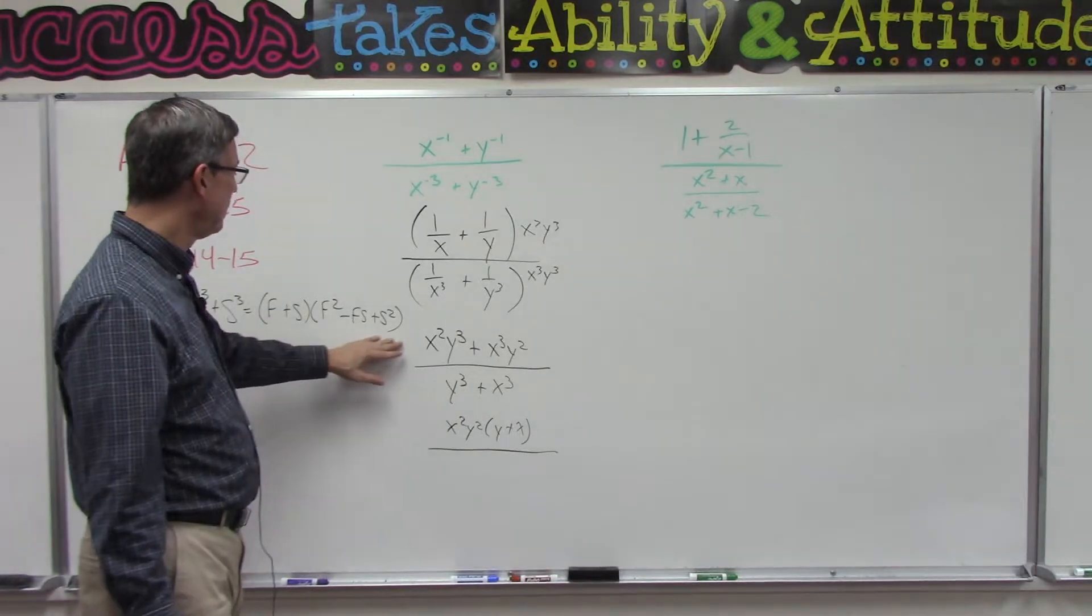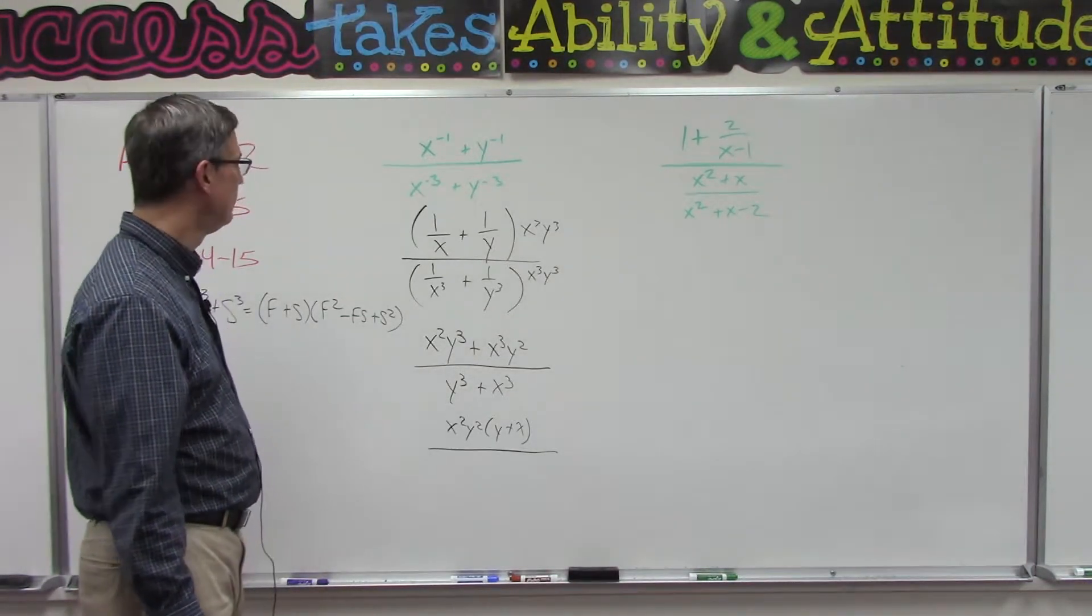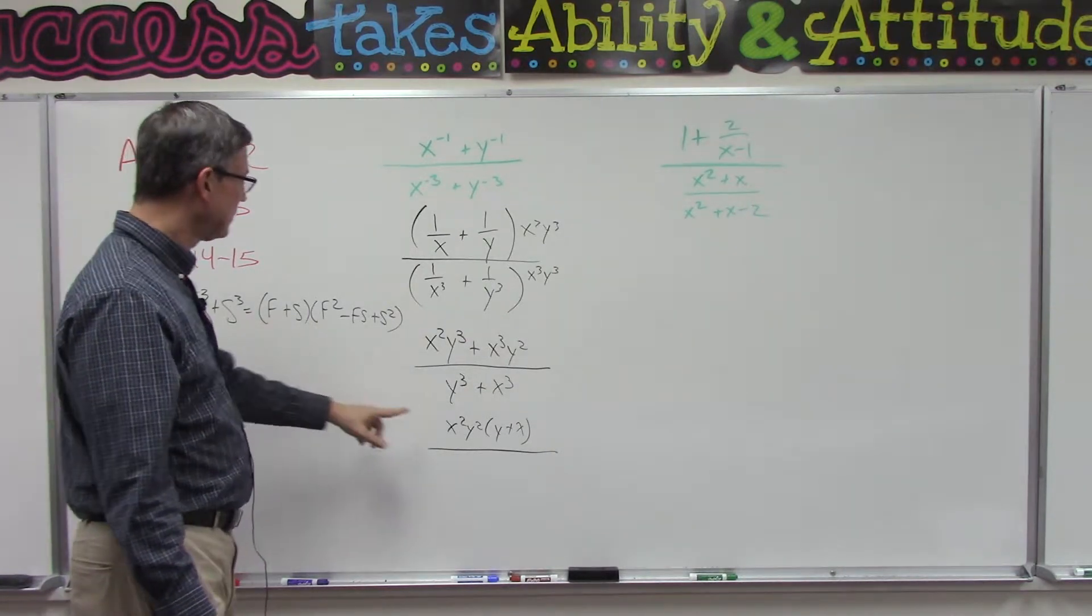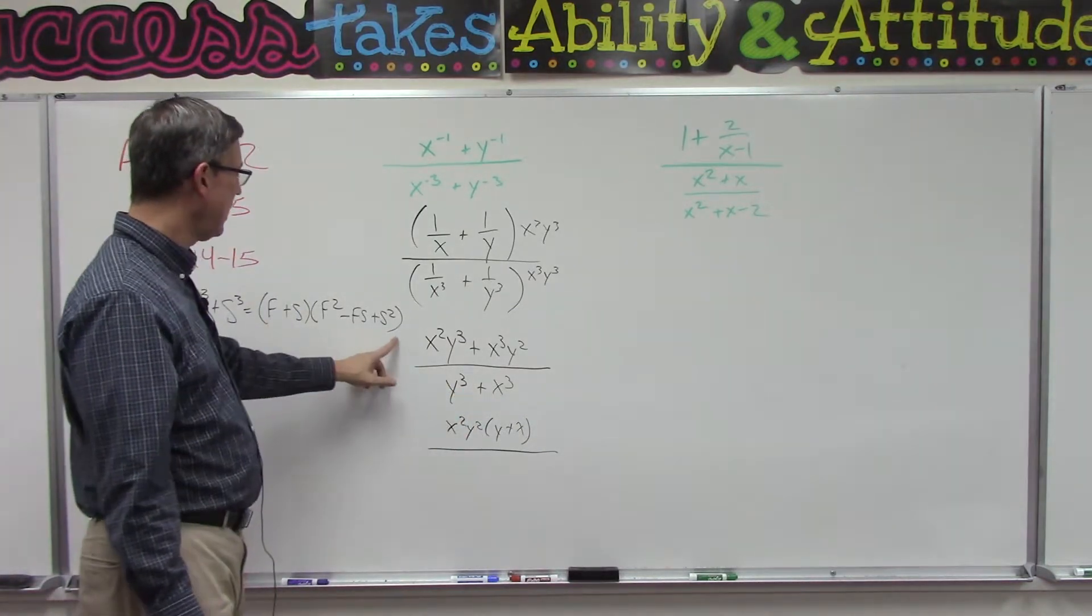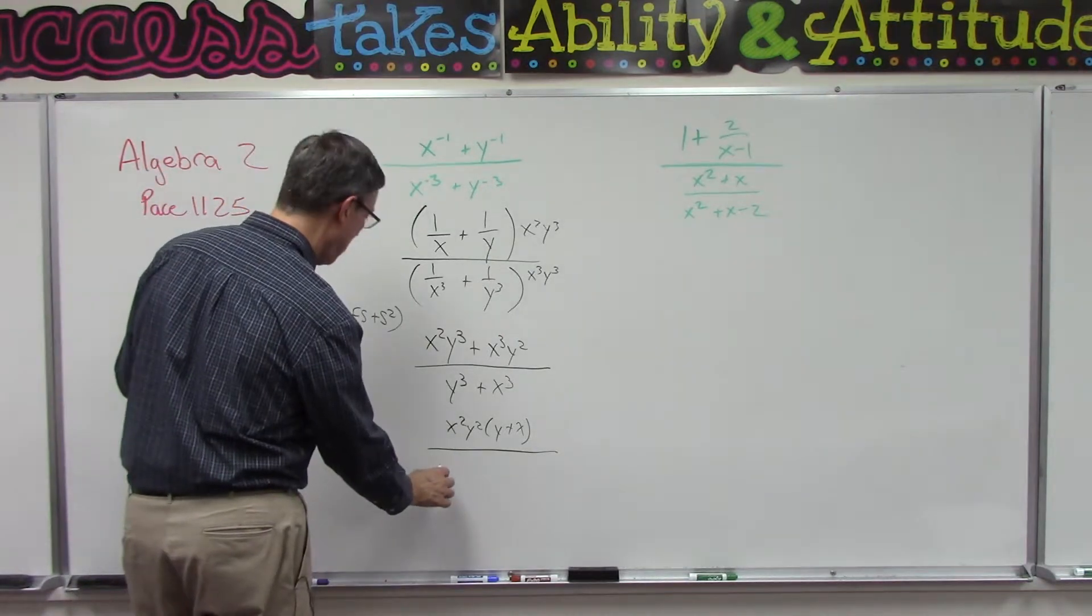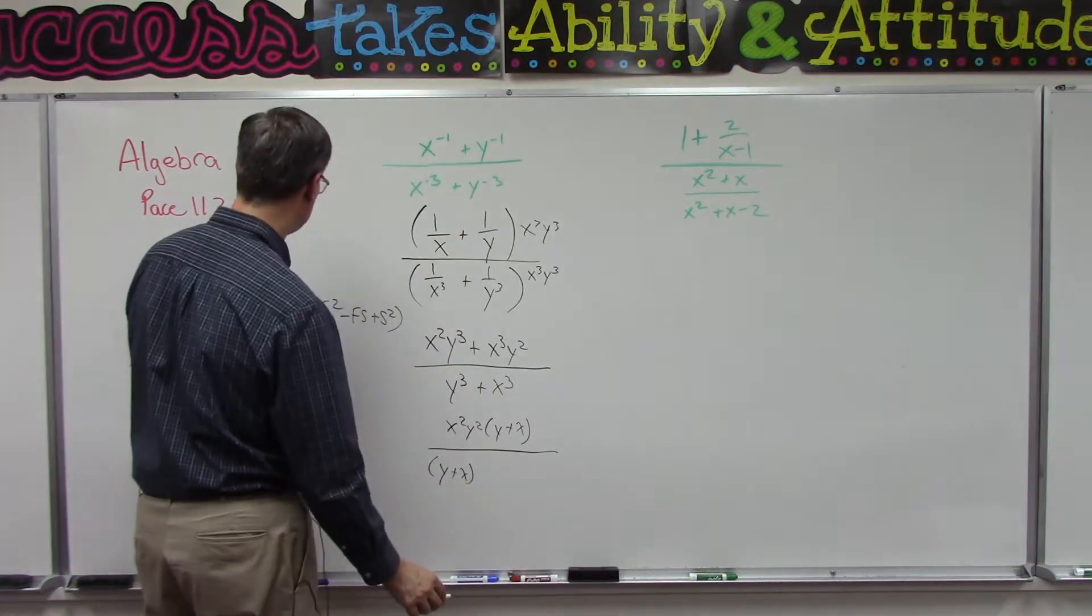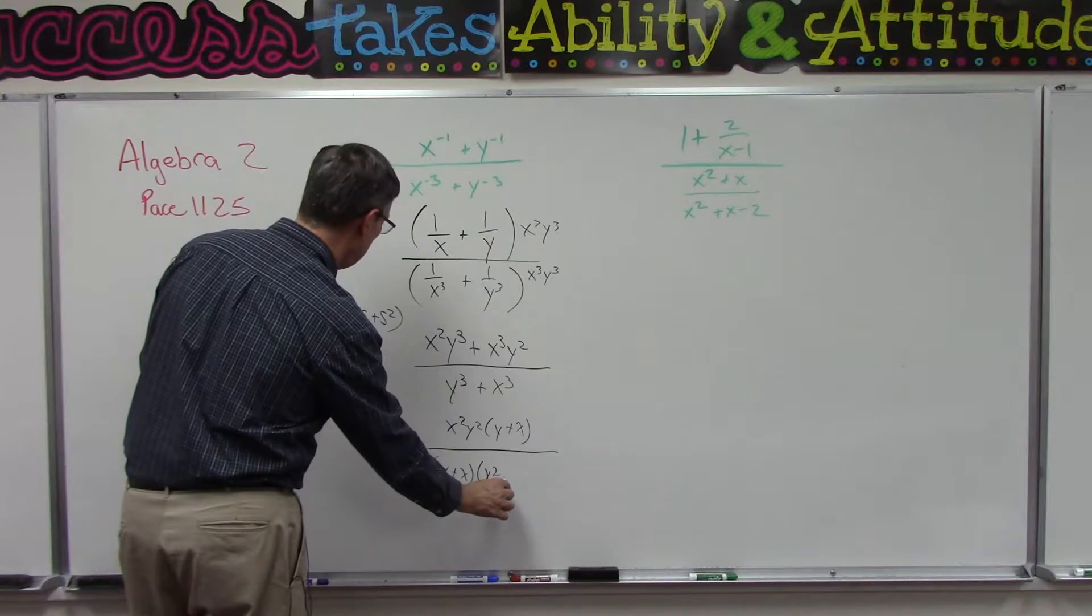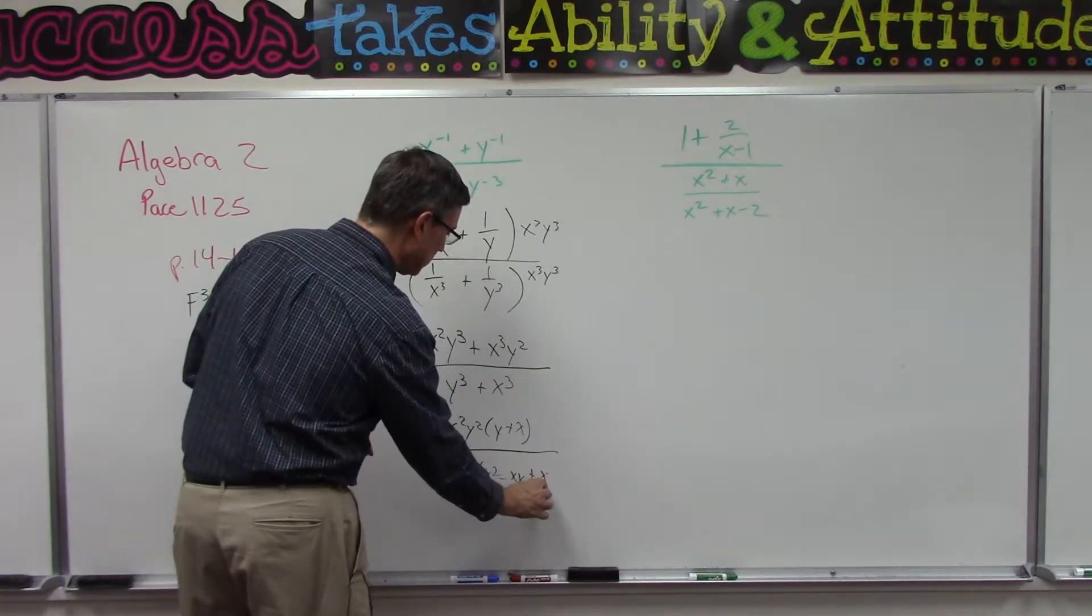So we're going to follow this pattern that we hopefully will have memorized or you can look it up if you have to. If you still have your old paces, you can go back and find this one. So we're going to factor the Y to the third plus X to the third into this pattern. So the first term is Y, so parentheses Y plus X, and then Y squared minus XY plus X squared.